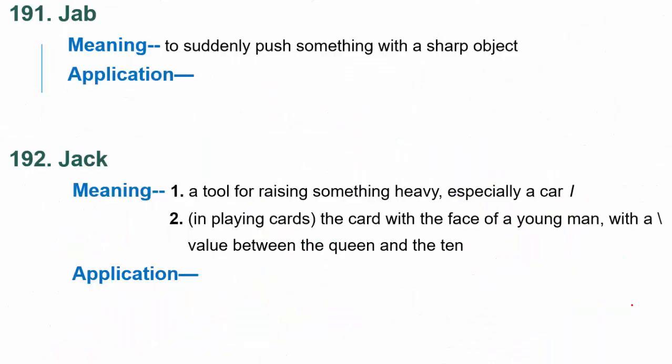The first word is jab. Jab is to suddenly push something with a sharp object. Kisi sharp object se aap kisi ko ekdam suddenly dhakka dete ho, to aap usko bolte hai jab karna. He jabbed the piece of meat with his fork — usne meat ke piece ko fork ke through jab kar diya.